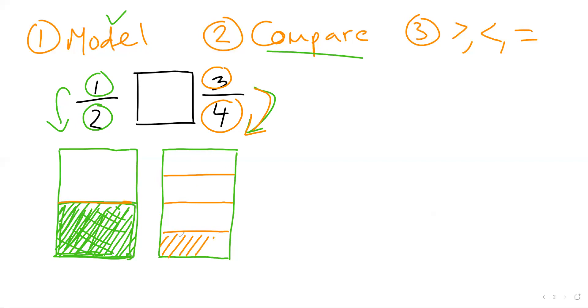And the numerator says three of those are shaded in. So one. And here's a good key. If I'm going to compare, notice over here, I shaded from the bottom up. I'm going to do the same thing here. So I'm going to start on the bottom and shade up. So there's one piece, two pieces, three pieces.